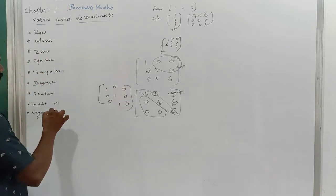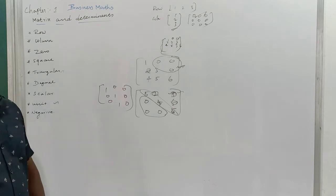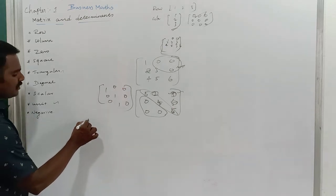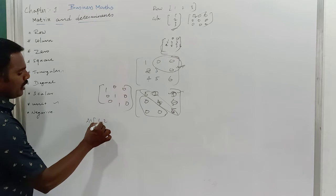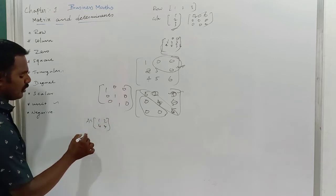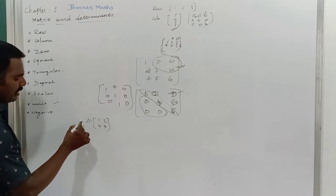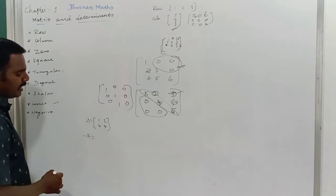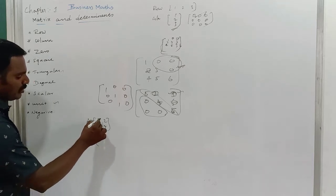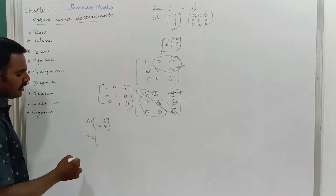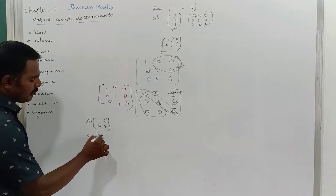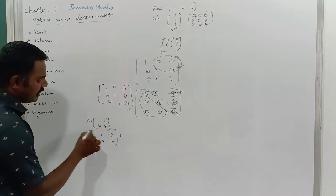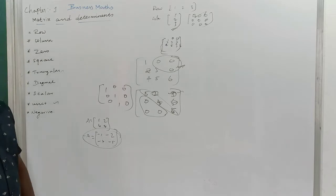Next, what is meant by the negative matrix? If we take matrix A with elements one, two, three, four, five — the negative matrix means you multiply each element by minus one. So the negative matrix of A has elements minus one, minus two, minus three, minus four, minus five. That is called the negative matrix.